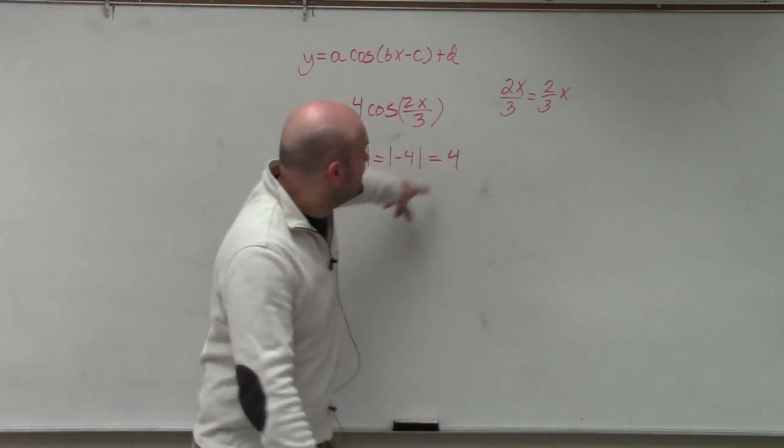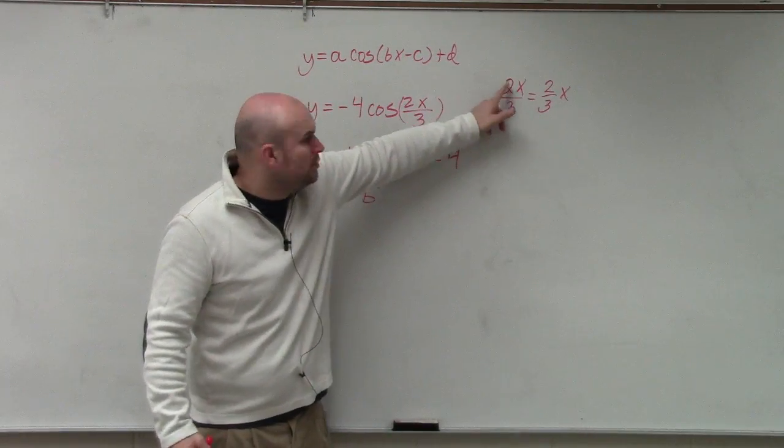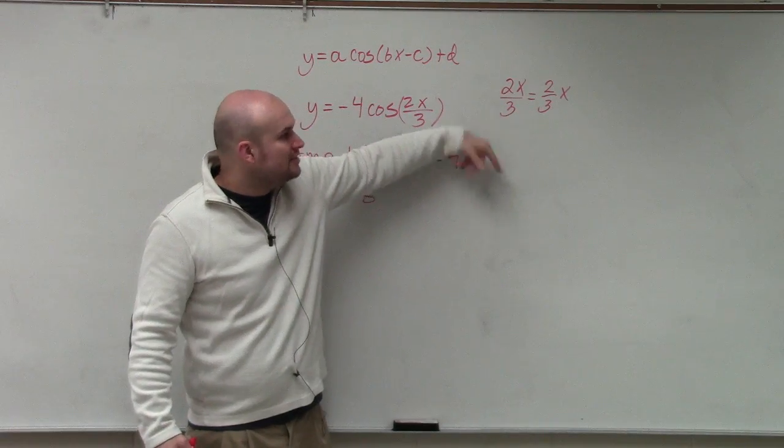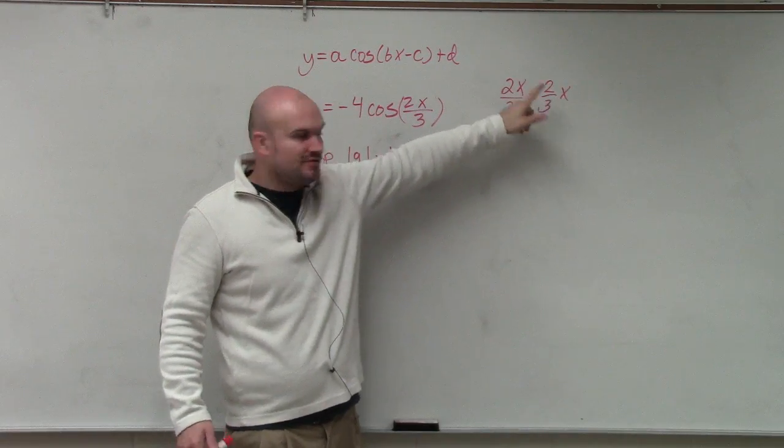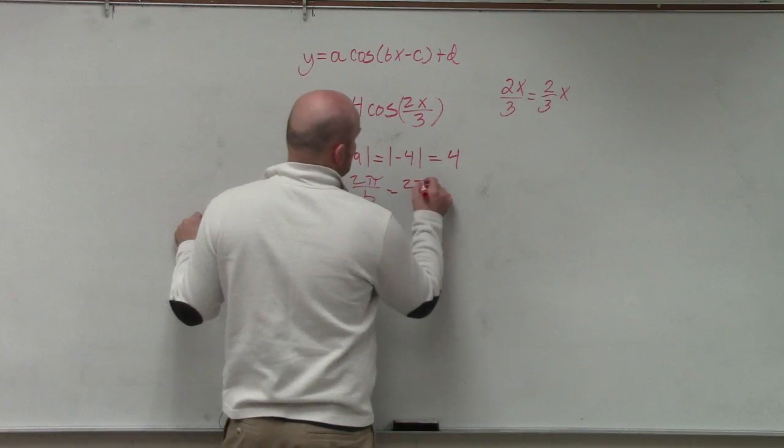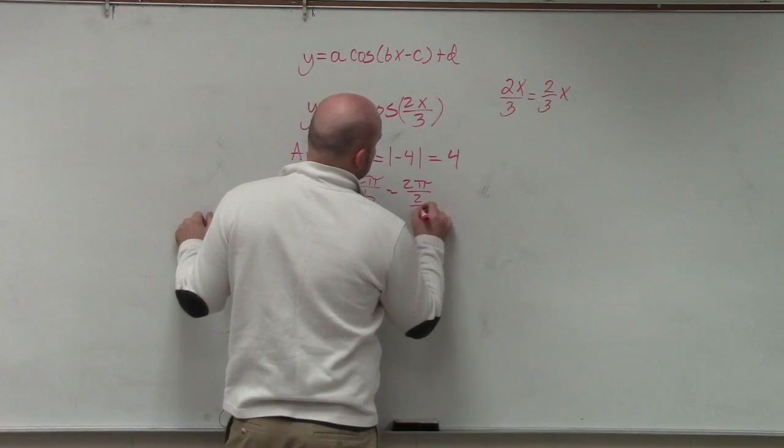So in reality, b is not 2 because that 2 is being divided by 3. So your b, in this case, is 2/3. So therefore, I have 2π divided by 2/3.